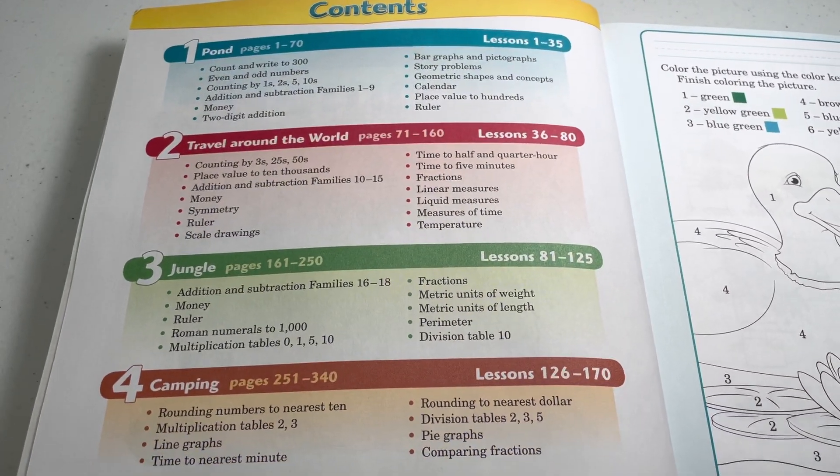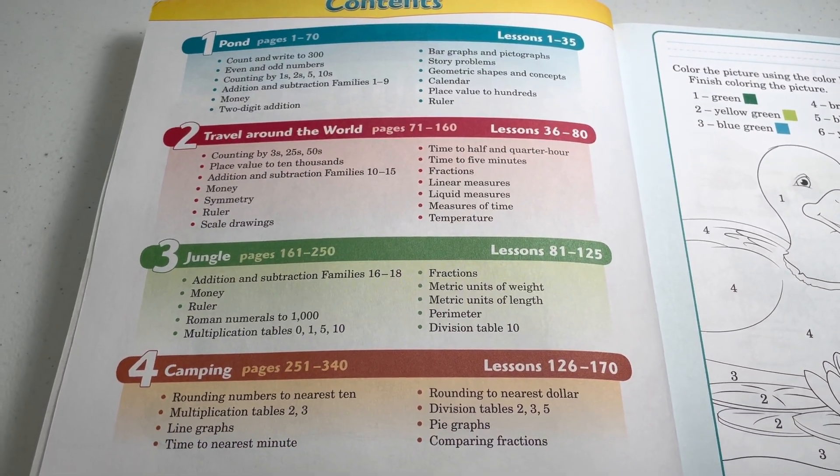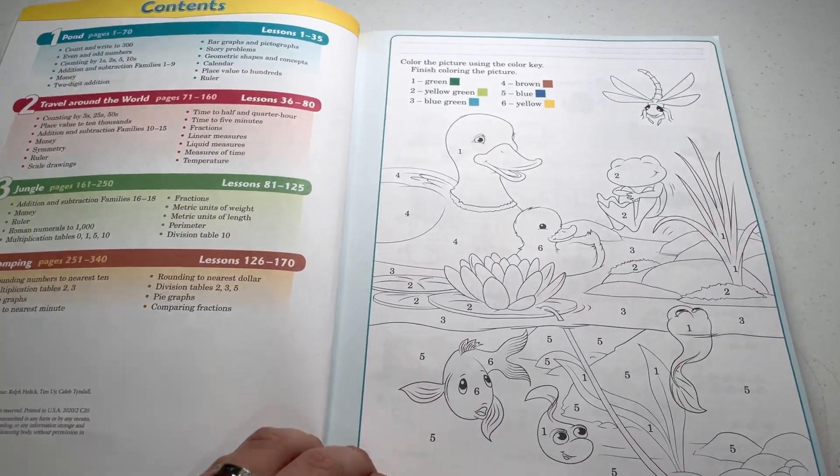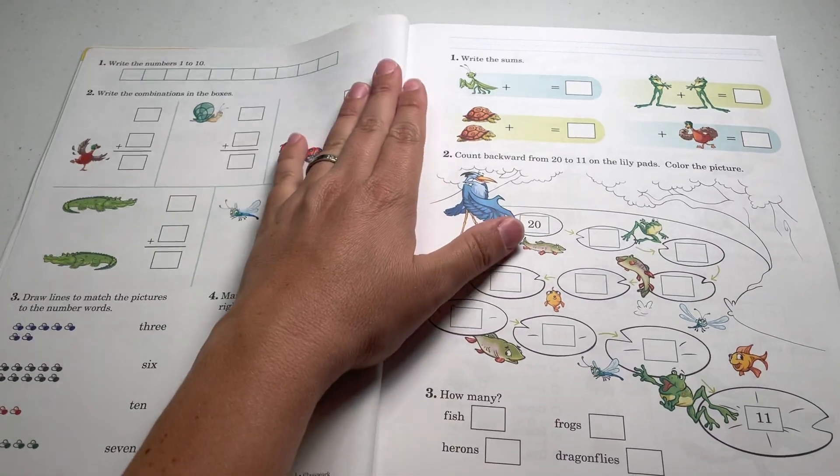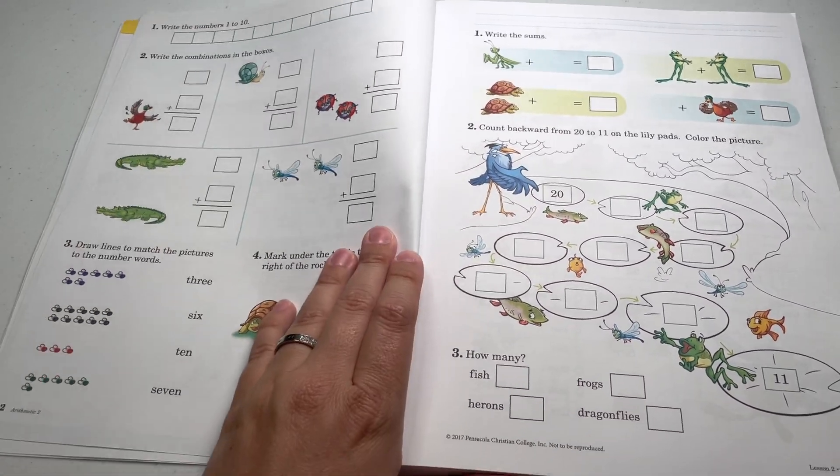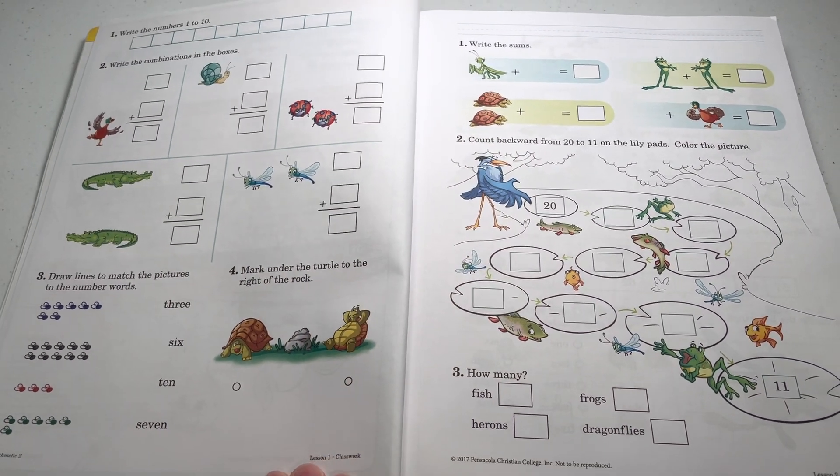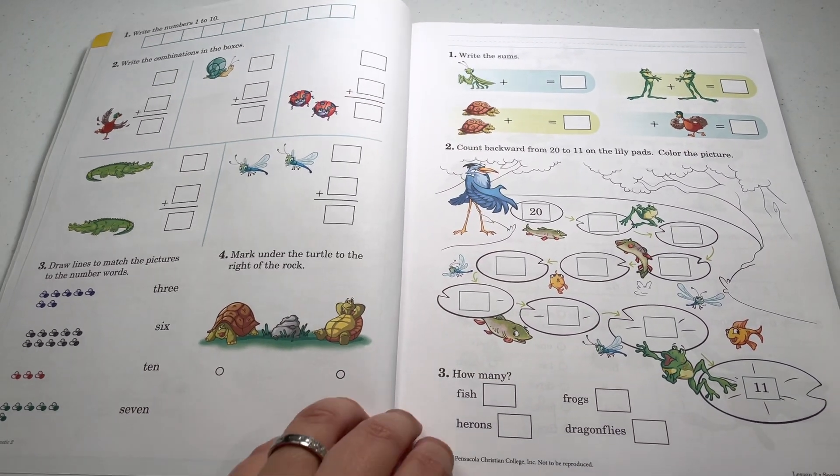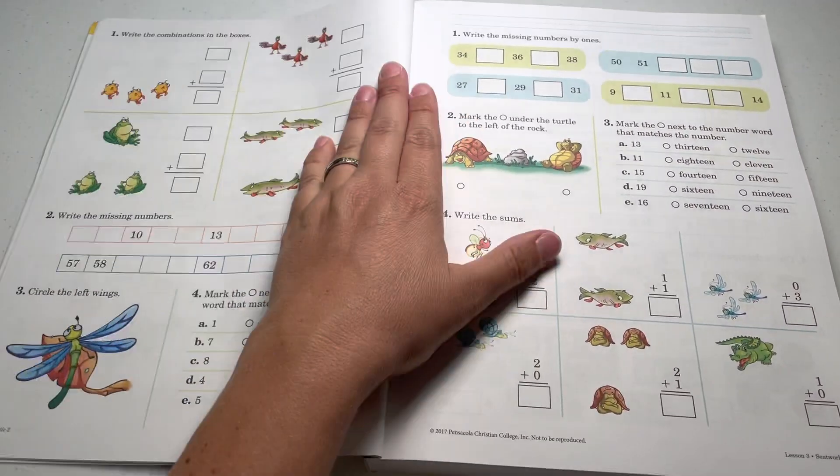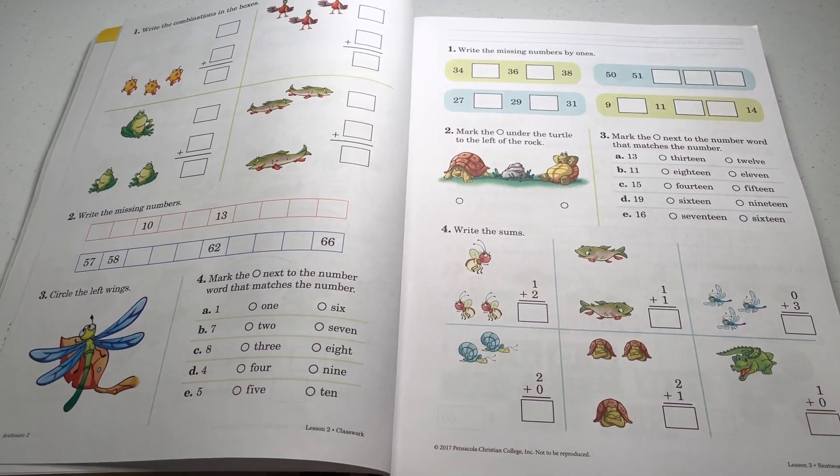So this is what it covers. And I'm going to just do a little flip through here. In the beginning, it's probably going to be a lot of review from grade one. And it's a page front and back for one lesson.